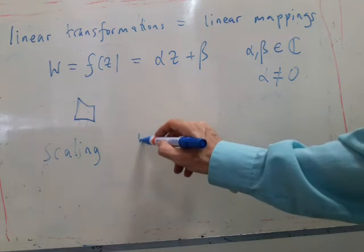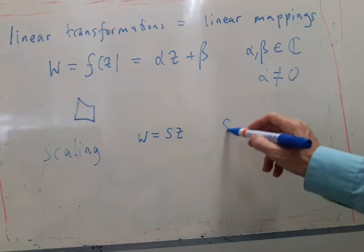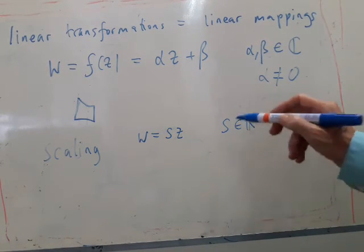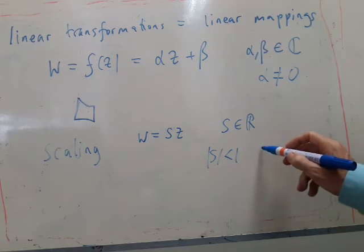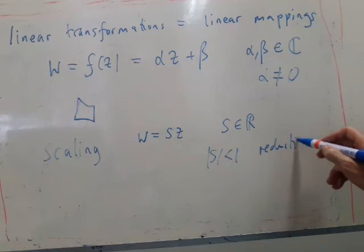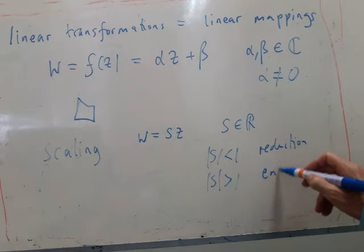So first of all, we have scaling. Scaling simply means w equals s times z, where s is a real number. And if s is less than one, we tend to call that a reduction. And if s is greater than one, it's an enlargement.